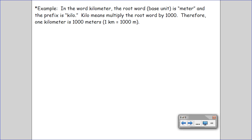The meter is the root word. Kilo meaning a thousand. Therefore, one kilometer is one thousand meters. One km equals a thousand m. That's a pretty simple one. One kilogram, well again, kilo means multiply by a thousand in grams, so one thousand grams.